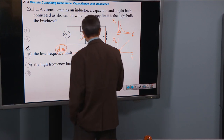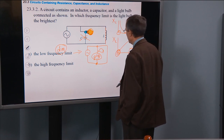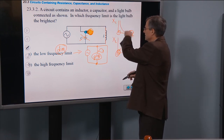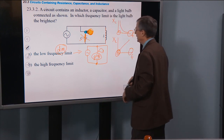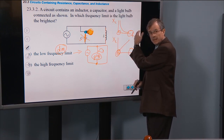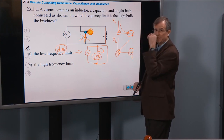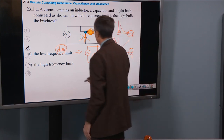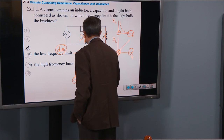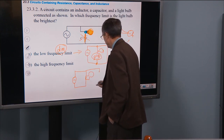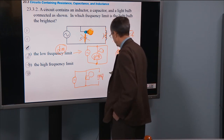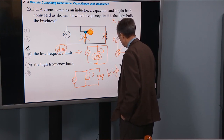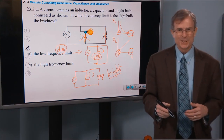In the high frequency limit, XC is small so the capacitor becomes a wire, and XL is high so the inductor acts like a huge resistor—replaced by a gap. The circuit becomes a path through the capacitor (now a wire) and the light bulb, with the inductor branch open. Current flows through the bulb, so it is bright. You can just let the math teach you what you need to know.